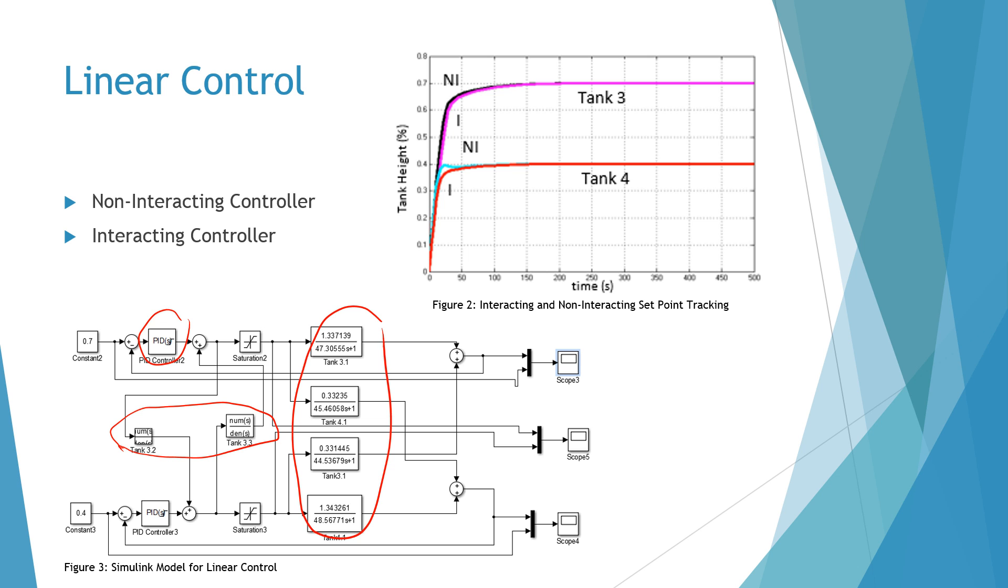We also found that when the set points had large differences the interacting control system could handle that better. This is because the controllers could talk to each other and when one controller ramped up the other one could ramp down to compensate for that.